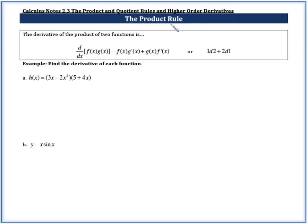First we're going to learn what the product rule is and how it can help us find derivatives of the product of two functions. If we have two functions multiplied together, f times g, we can find the derivative using this rule: it's the first function f times the second function's derivative g', plus the second function g times the first function's derivative f'. One way to remember this: 1d2 plus 2d1.